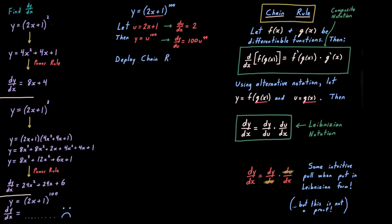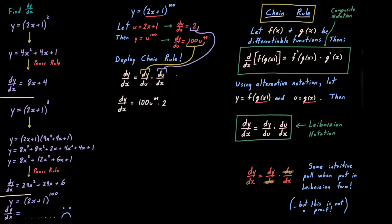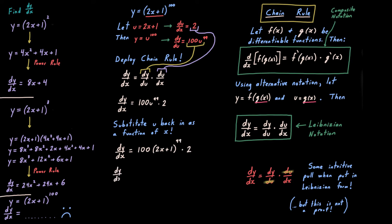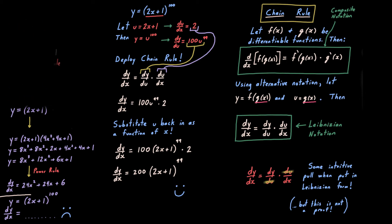Now we are in prime position to deploy the chain rule. We have both pieces — dy over du and du over dx — so we smush them together and we're pretty much done. The final thing we have to do: if we're finding the derivative of y with respect to x, we want it as a function of x. So substitute u back in as 2x plus 1, and you are done. After a tad of simplification, it's 200 times 2x plus 1 to the 99th — much, much quicker and much happier process. No need to foil 99 to 100 times. This problem is a smiley face with the chain rule.